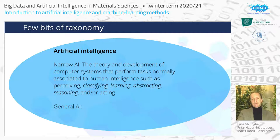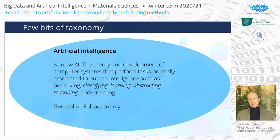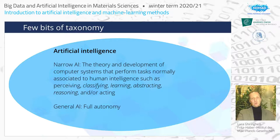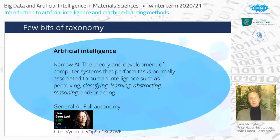As opposed to narrow AI, we have general artificial intelligence. A very short definition: full autonomy — hinting at the fact that general AI is some kind of system performing all human-like activities, and in some sense it will essentially outperform humans, because there is no reason why such a system would be limited to human-level performance.